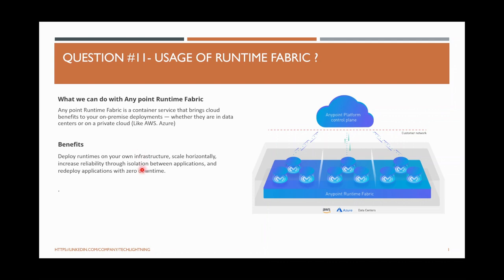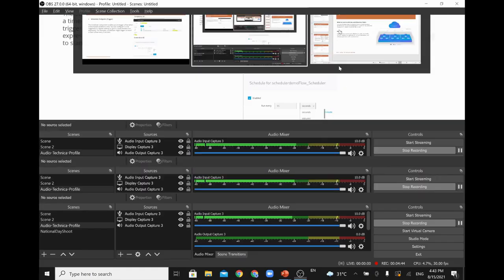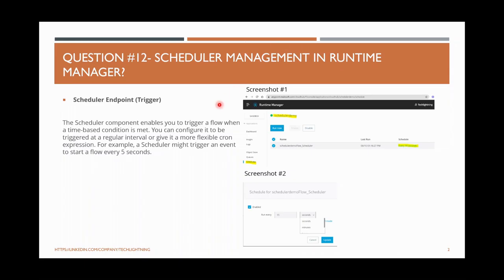Moving on to scheduler management in Runtime Manager. When you develop any application with a scheduler component, you set the scheduler timing — for example, every one minute or once a day. You deploy the application into Mule runtime. After that, if you want to change the scheduler time, you don't go back to the Mule application and update it directly. Instead, you go to Runtime Manager.